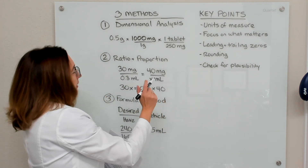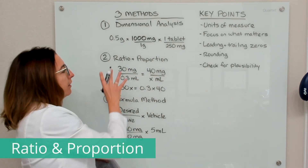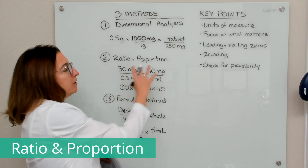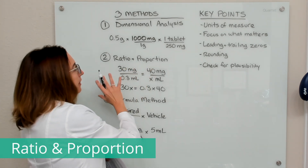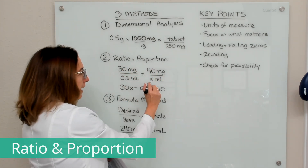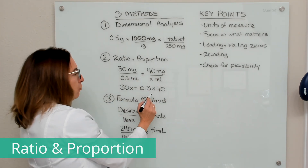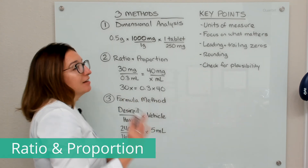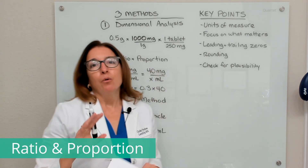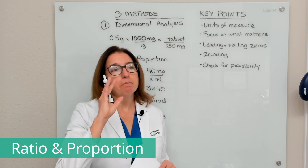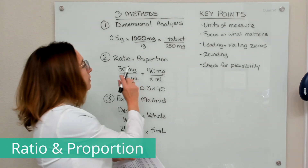The second method is ratio and proportion. This is where you compare a known ratio to another ratio with an unknown component, and then you take these ratios and cross multiply. So you would take 30 times X and 0.3 times 40, and then solve for X. If you are a fan of algebra, then this may be your preferred method. One thing to keep in mind is that it often takes multiple steps to solve a dose calculation problem using ratio and proportion.